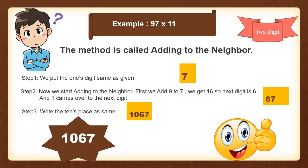Let us now see another example where we have to multiply 97 by 11. Step 1: we repeat what is written at the 1s place, so we get 7. Then in step 2, we add the neighbors: 9 plus 7 gives us 16. But 16 is a double-digit number, so we only take 6 and 1 will go as a carry over to the next number.